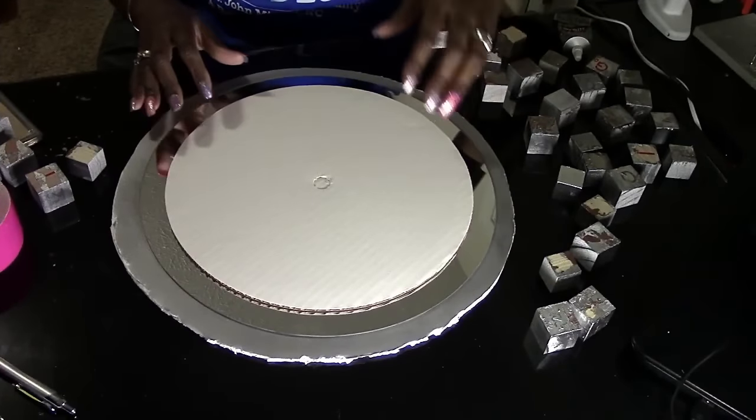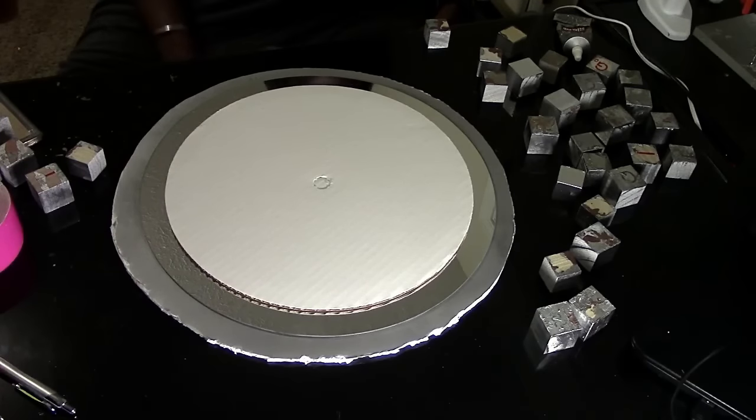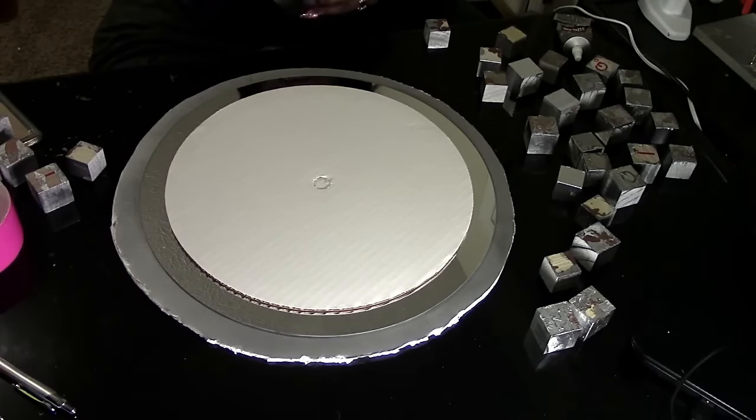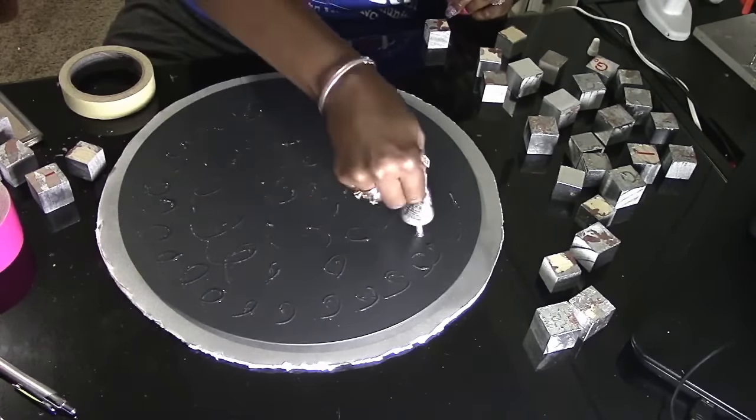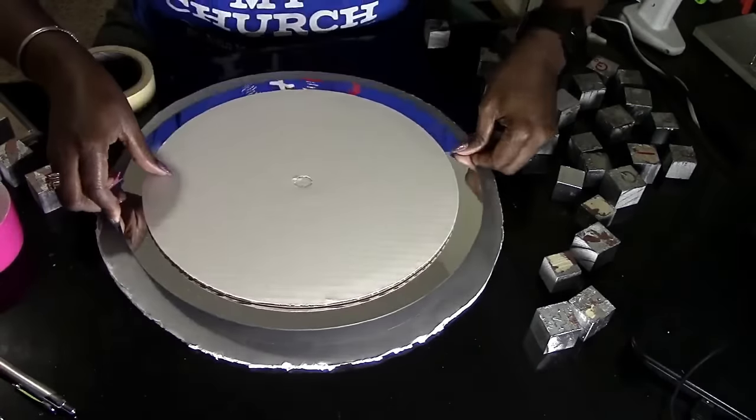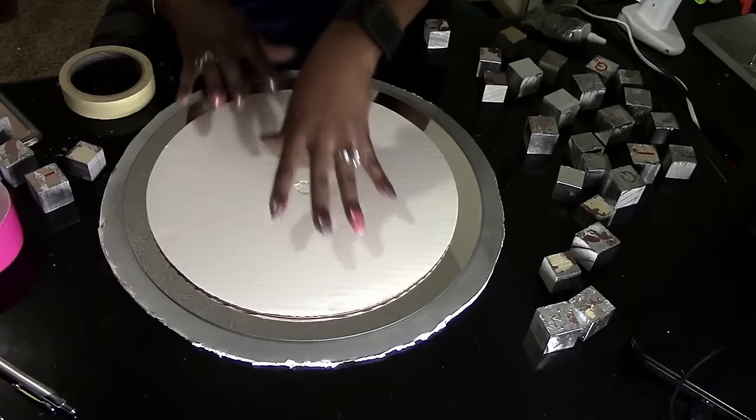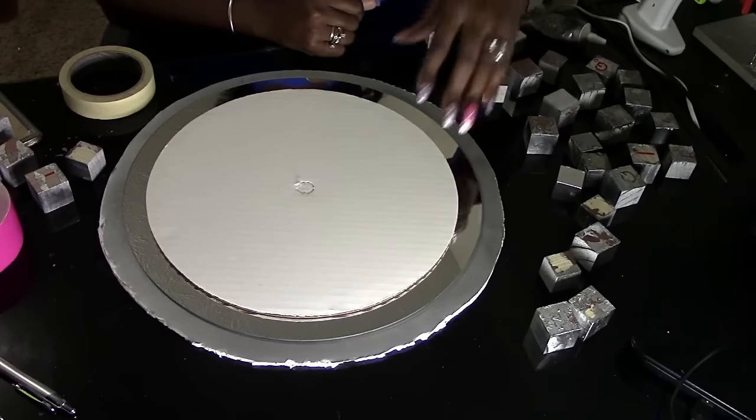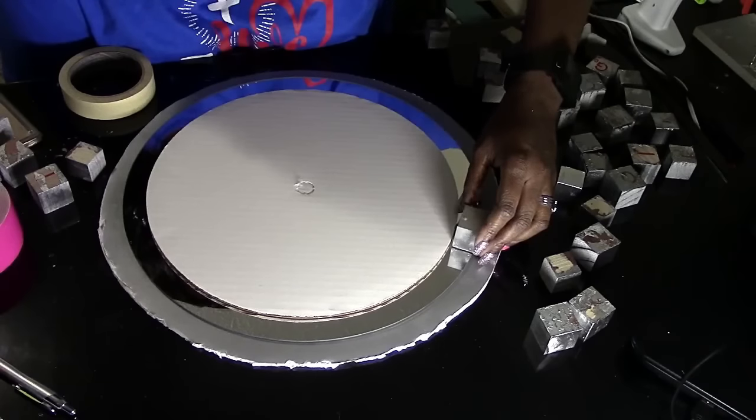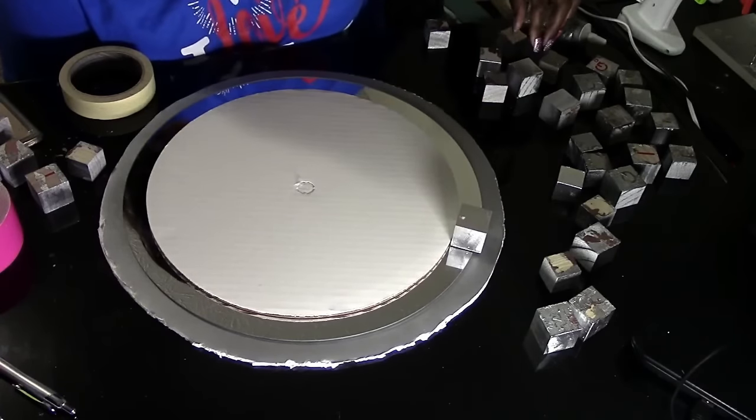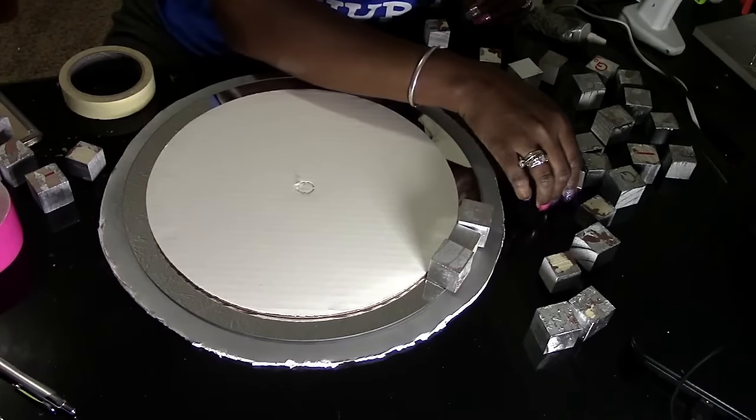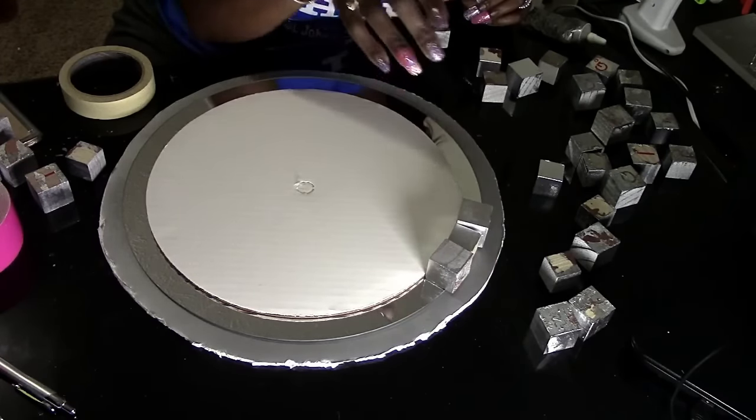So the next thing we're going to do is we're going to affix our mirror to our foam board. Next we're going to start positioning our blocks around. We're going to sit it like this and right now I'm just going to abut everything to the mirror. I'm going to do this all the way around and then when I come back we'll go to the next step.